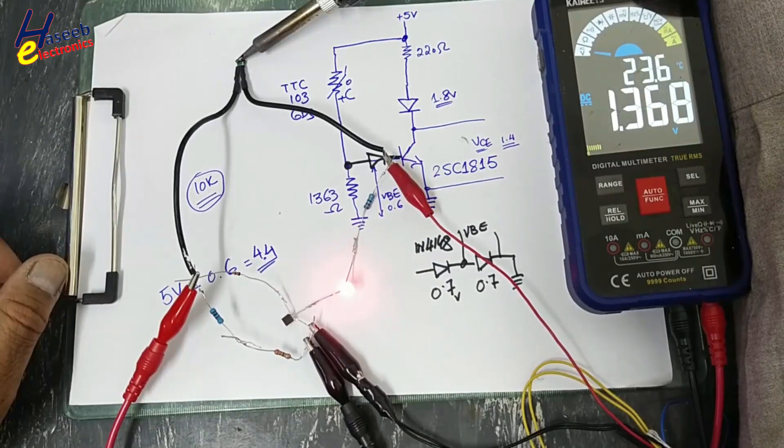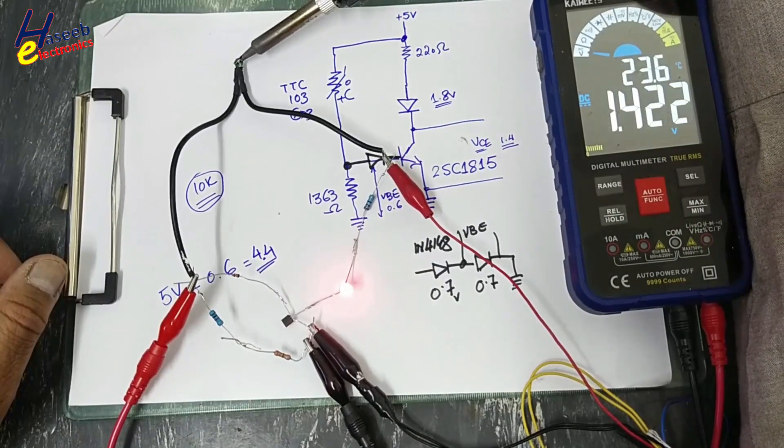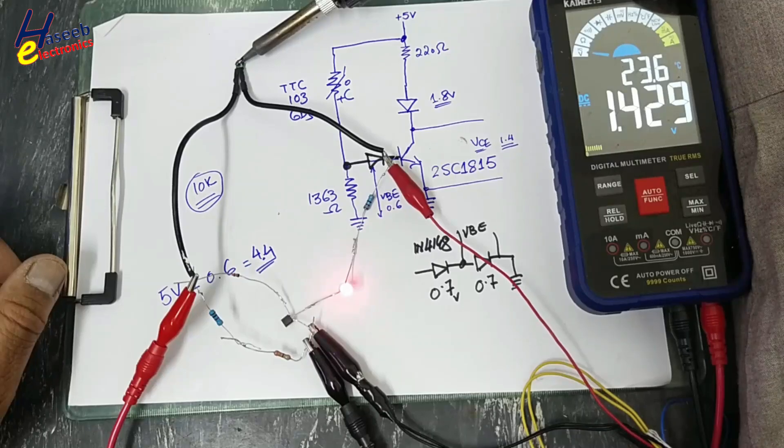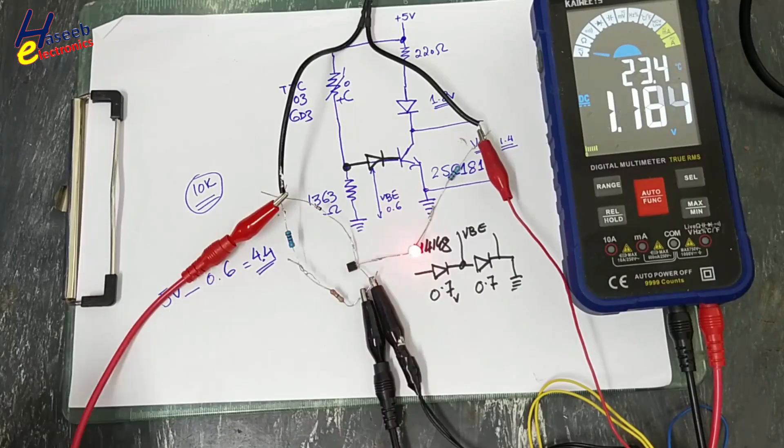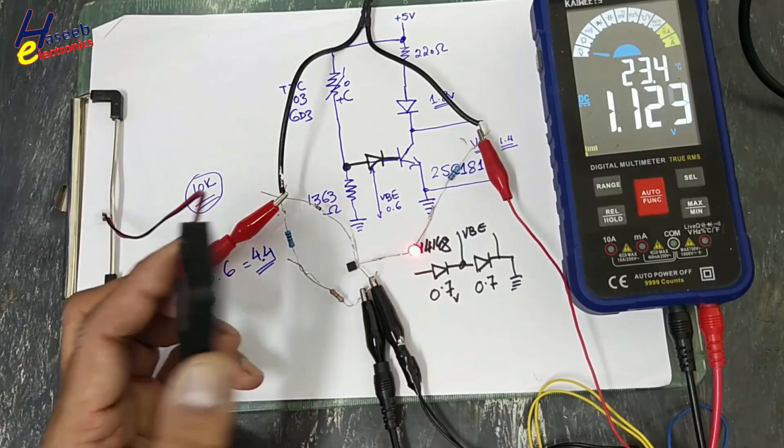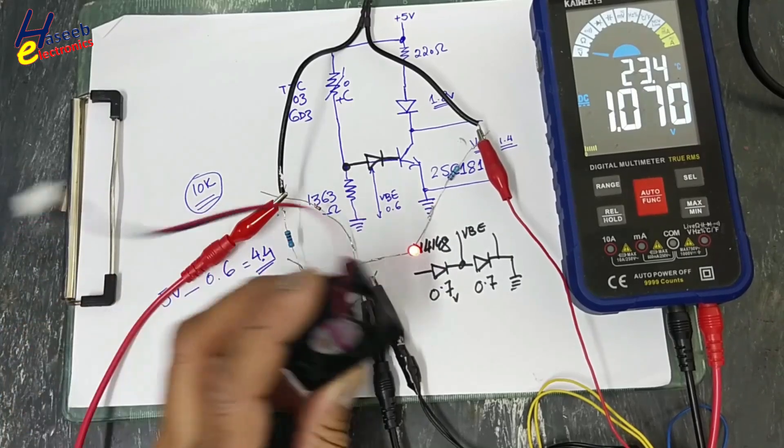One point two volts, the LED is now bright. In the upcoming session we will control the fan using this project.